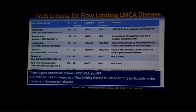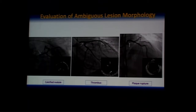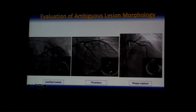IVUS is particularly useful in the LMCA in the presence of downstream disease where FFR has fallacies. The second important role is evaluation of ambiguous lesion morphology. Observe three lesions that all appear hazy and similar angiographically. On IVUS, the first is a calcified nodule, the second is thrombus, and the third is ruptured plaque — all needing different treatment strategies.